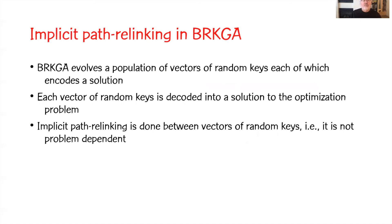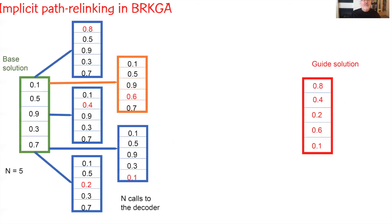How do we use path relinking within a bias random key genetic algorithm? BRKGA involves a population of vectors of random keys, each encoding a solution. Each vector is decoded into a solution to the optimization problem. Implicit path relinking is done between vectors of random keys — it is problem-independent. For example, given a base solution and a guide solution, we insert into the base solution elements of the guide solution not present in the base: 0.8, 0.4, 0.2, 0.6, and 0.1.